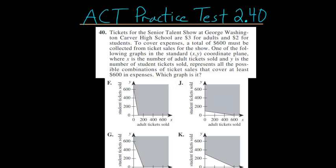For the 40th problem on the second ACT practice test, tickets for the Senior Talent Show at George Washington Carver High School are $3 for adults and $2 for students. To cover expenses, a total of $600 must be collected from ticket sales for the show.